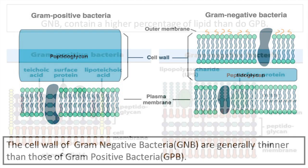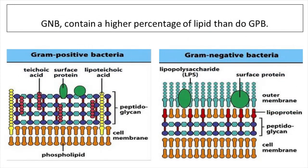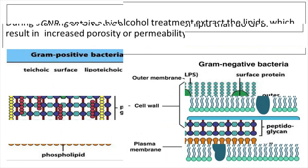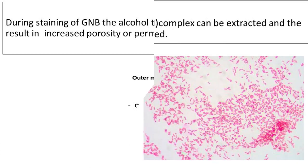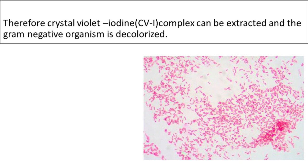Gram negative bacteria contain a higher percentage of lipid than Gram positive bacteria. Experimental evidence suggests that during staining, the alcohol treatment extracts the lipids, which results in increased porosity or permeability of the cell wall. Thus the crystal violet-iodine complex can be extracted and the Gram negative organism is decolorized.